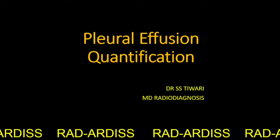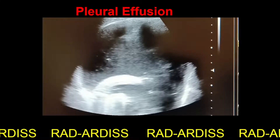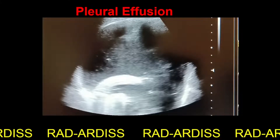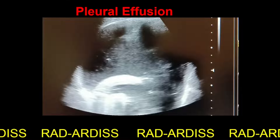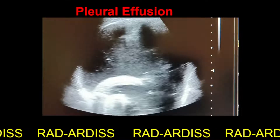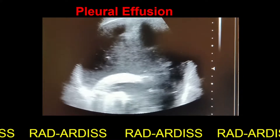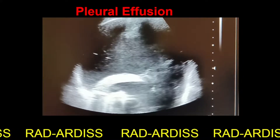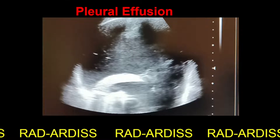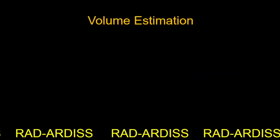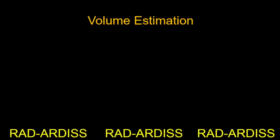This is the ultrasound image of the chest of a patient who is having pleural effusion. We can see that there are multiple floaters inside the fluid, which means this effusion is exudative effusion. Let us proceed towards volume estimation of this fluid.